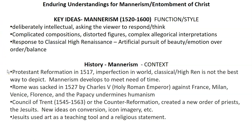Some of the historical context: the Protestant Reformation in 1517 opened up Christianity in Europe, raising questions about what the Catholic and Protestant churches really wanted to say. We also have Rome being sacked by Charles V, the Holy Roman Emperor, in 1527. Shortly after, the Council of Trent — the Counter-Reformation — assembled to try to bring people back to Catholicism. The new order of Jesuits emerged to work on converting people and bringing them back to Catholic belief.